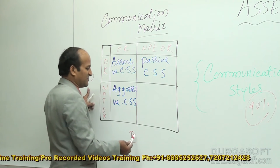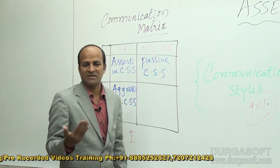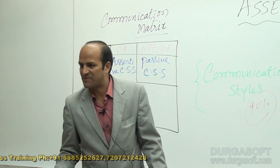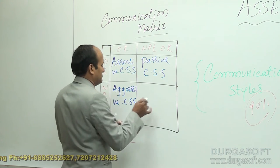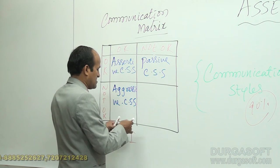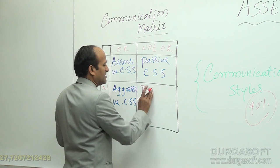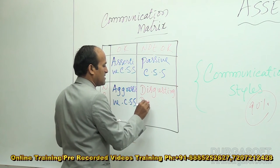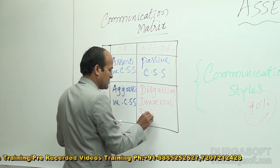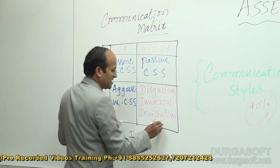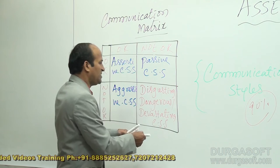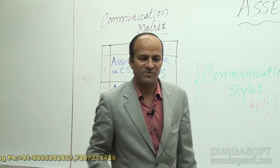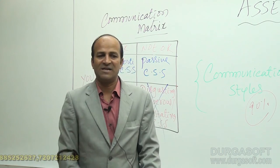There is another style of communication where both of us are not comfortable — I am not winning and you are also not winning. This kind of communication is disastrous, disgusting, and dangerous. It is to be avoided because when neither person wins, it becomes a disaster in our relationship. This can happen in situations like accidents — when two people clash, both claim to be right, but in reality both are losing.